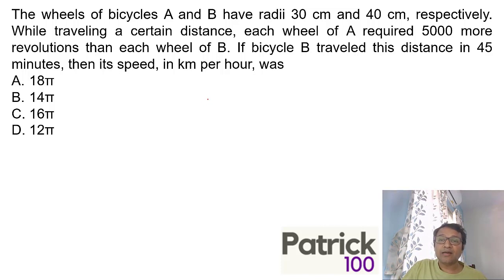The wheels of bicycles A and B have radii 30 and 40 centimeters respectively. While traveling a certain distance, each wheel A required 5000 more revolutions than each wheel of B. Distance traveled equals circumference times number of revolutions. So, one circumference is the distance covered in one round. First, what's given: the radius is 30 and 40, which means the ratio is 3 to 4. Which means the circumference also will be in a ratio of 3 to 4, because in similar figures the ratio of different lengths will be in the same ratio.